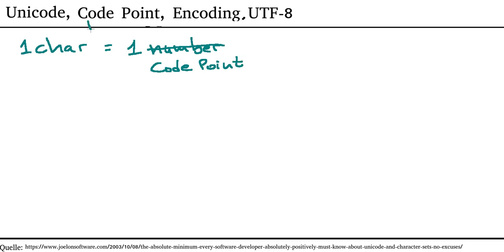And code point is basically just another fancy word for the word number. To give you an example, the capital letter A is represented by 0041 in hexadecimal, which amounts to 65, the number 65 in decimal, just for reference.